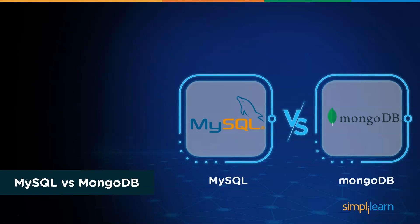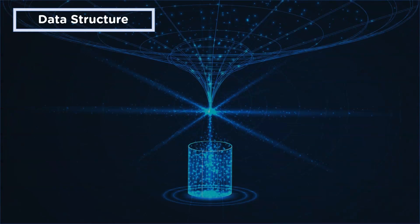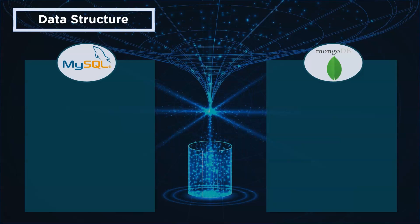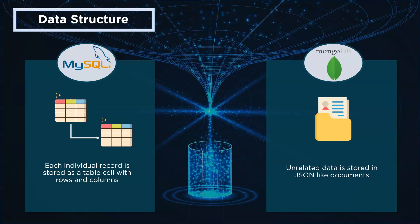Let's look at some of the differences between MySQL and MongoDB depending on certain features. First up is data structure. MySQL requires you to define your tables and columns before you can store anything, and every row in a table must have the same columns. In MongoDB, you just drop the data into documents. Also, the data in MongoDB is stored in a binary format called BSON.